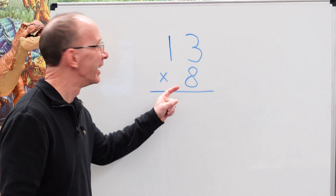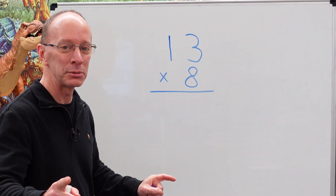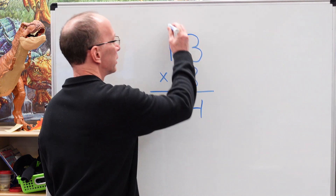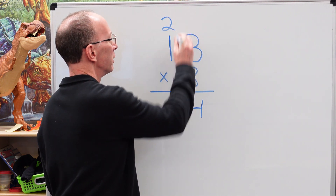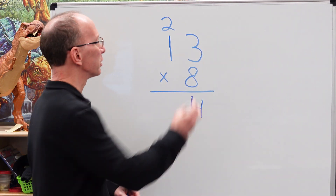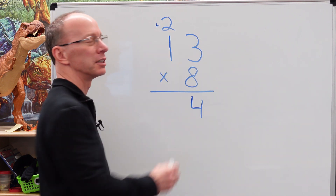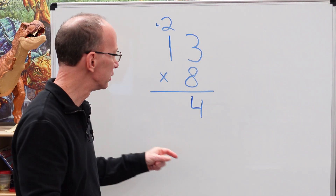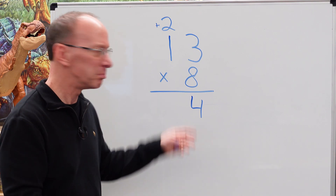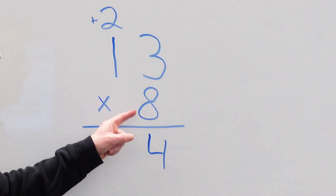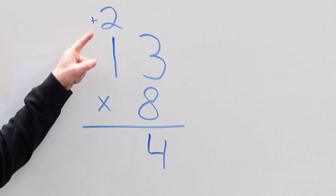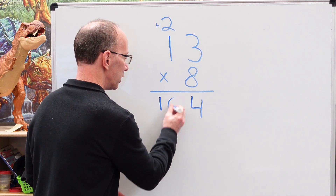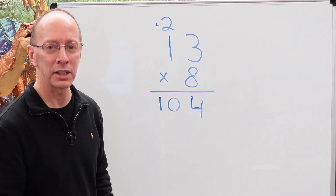Okay, here we go. 8 times 3 is 24. Put the 4 right here, put the 2 up here. Now if you want to, you can put a plus sign up there just to remind yourself that you're adding — but later on you probably won't need to. 8 times 1 is 8, plus the 2 is 10. Put the 10 right there. 104 is the answer.